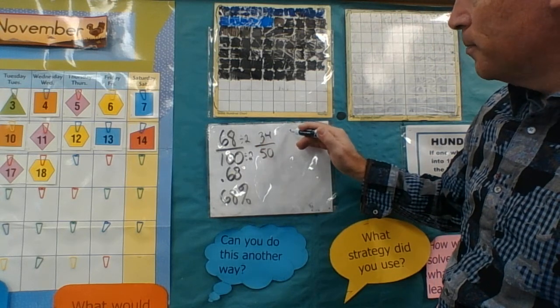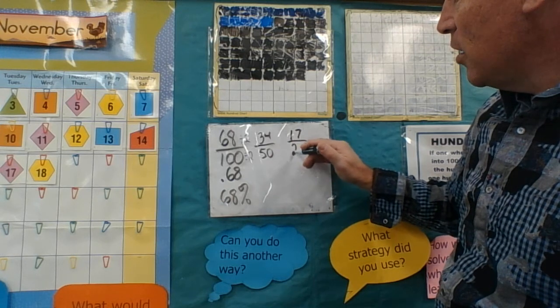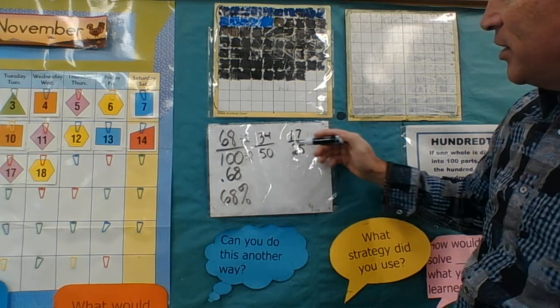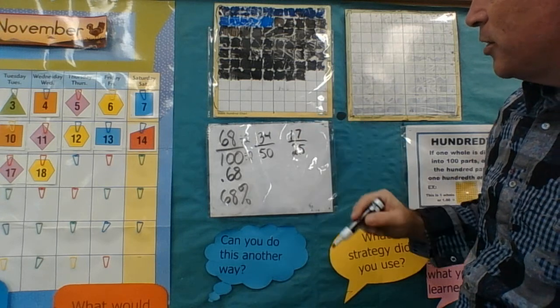Now half of 34 would be 17. And half of 50 would be 25. Now 17 is a prime number, so I know this is in its simplest form.